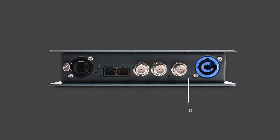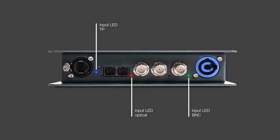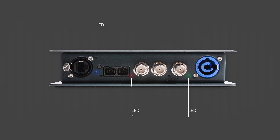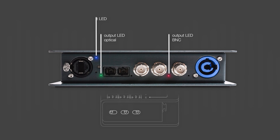The input LEDs reflect the status of the input signal. Each carrier type is represented in one color: blue or white for twisted pair, red for optical, and green for BNC. A permanent glow indicates a valid signal. If the signal is lost, the LEDs will blink for two seconds before going off. The current routing settings are indicated by the output LEDs next to the inputs and outputs.